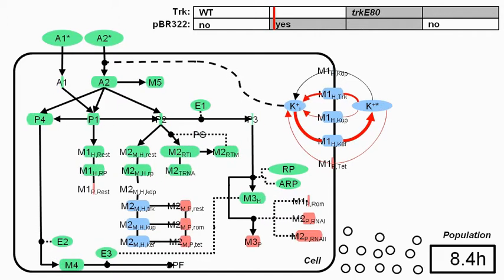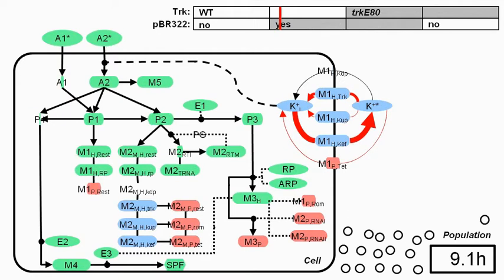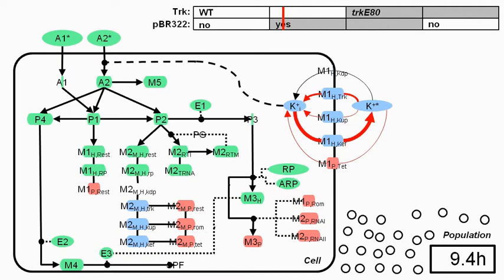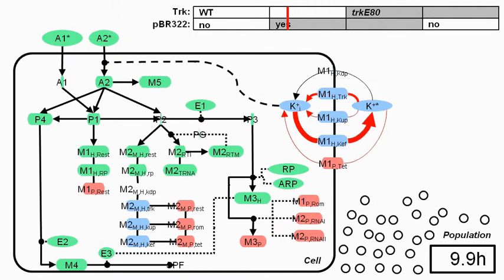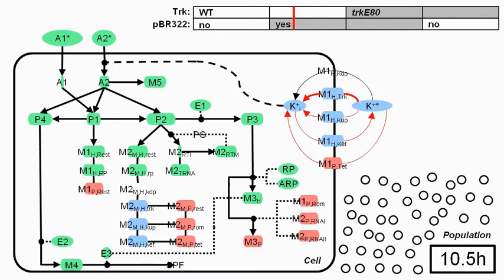The second period starts again with a high nutrient concentration and growth rate. This strain has now acquired the antibiotic resistance plasmid. The plasmid components are red, and they include DNA, RNA, and proteins.